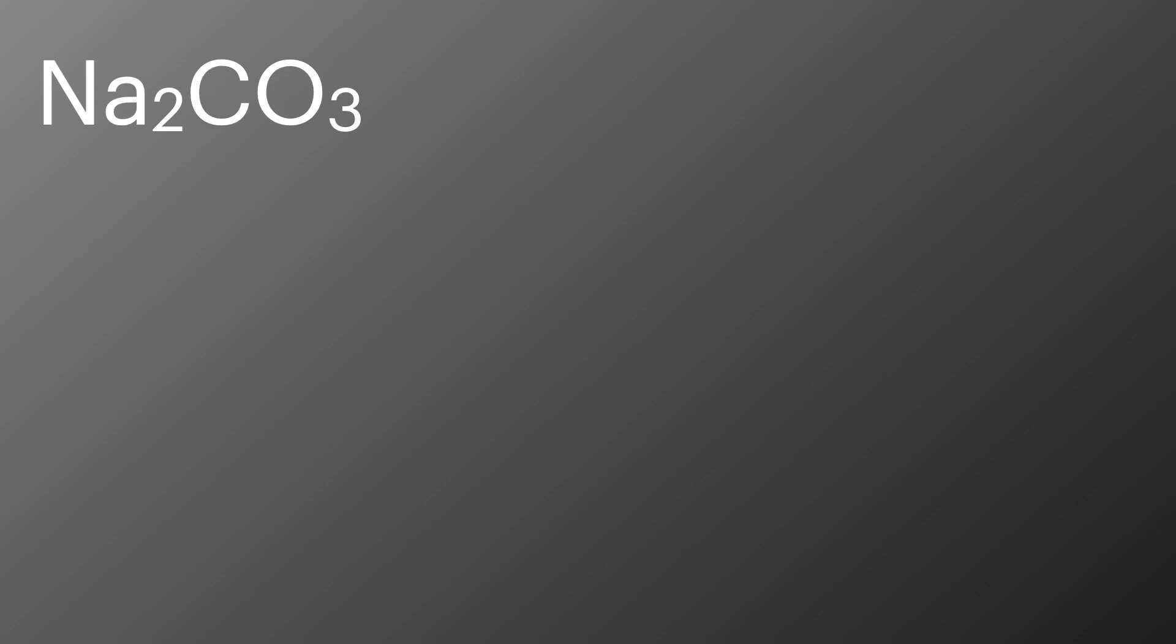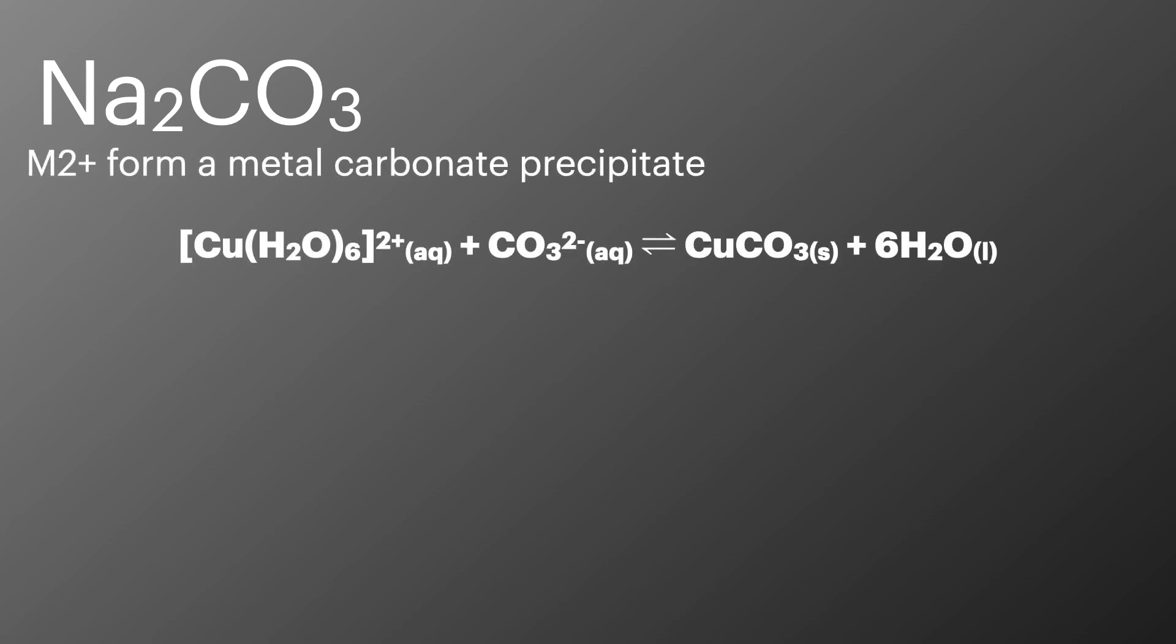A metal carbonate, and for our specification specifically sodium carbonate, has different reactions depending on the acidity of the metal ion. Metal 2 plus ions are weaker acids than the metal 3 plus ions, and they form metal carbonate precipitates.